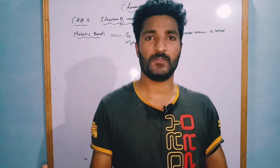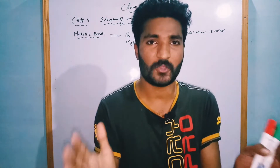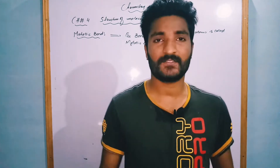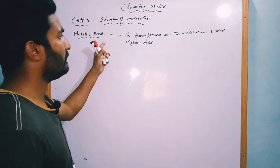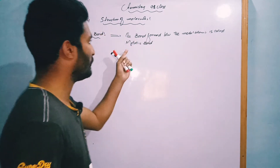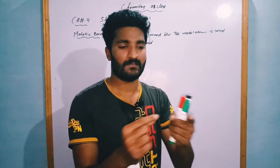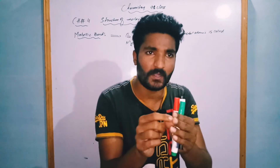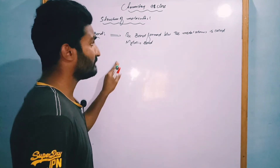Hello ninth class, hopefully you all are fine and happy. Today we will learn chemistry chapter 4, structure of molecules. The topic we have here is metallic bond. The bond between the metal atoms is called a metallic bond. In simple words, the bond that exists between metal atoms is called a metallic bond.